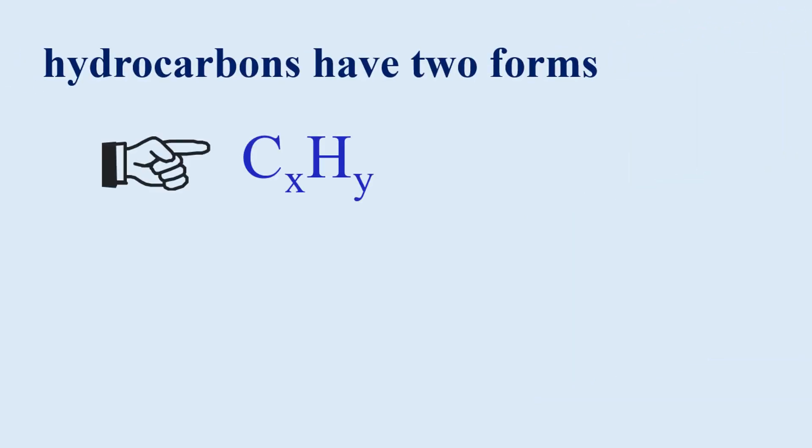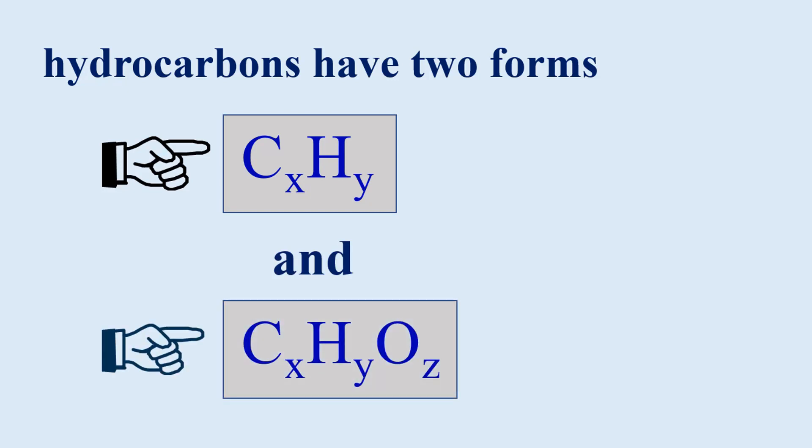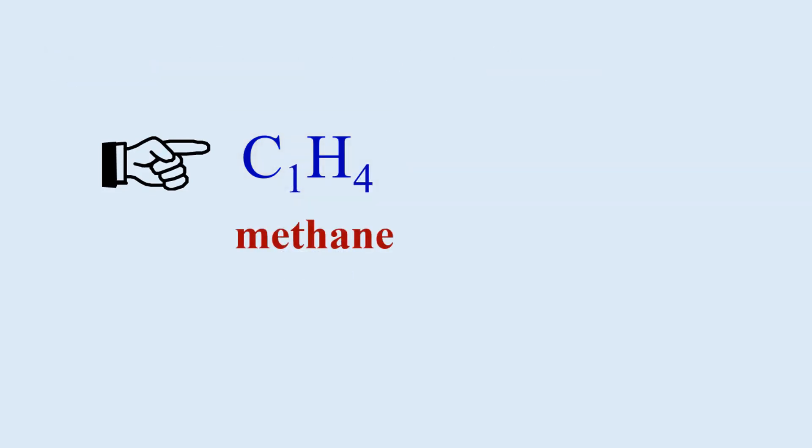Hydrocarbons come in two slightly different forms. The first one we see here as CxHy. The other is CxHyOz, with the X, Y, and Z representing a huge range of subscripts. For example, CH4 is methane, or we could have ethane, propane.